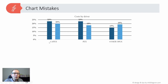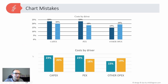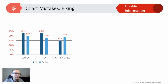Coming back to the first chart, you can see it's still better to go through a few steps in order to reach a clearer and more visible version of the chart. I'll show you the ways to do it. First, let's tackle the first issue I mentioned — the double information.